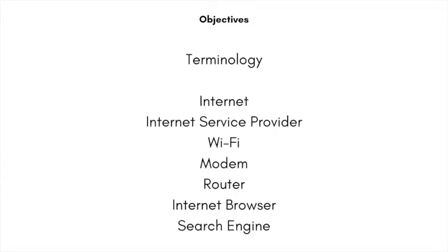Other words you may hear are modem and router. These are specific devices within a home or business. You need both the modem, which provides the internet, and the router, which provides the internet wirelessly. How you view and use the internet is through an internet browser, and I will be showing you how to navigate one. I also want to mention a search engine.